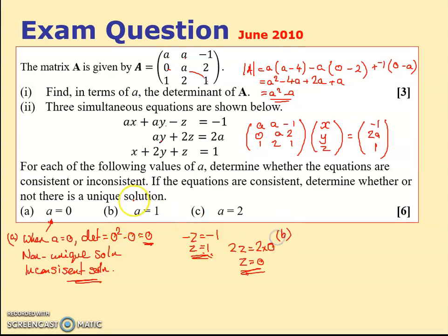Let's try the B case. Well, now A is 1. Well, when A is 1, I get the determinant now is 1 squared minus 1, which is still 0. So we've got a non-unique solution again.